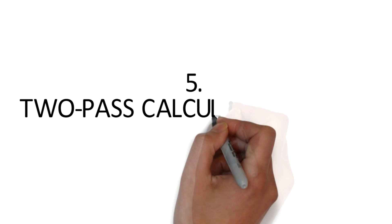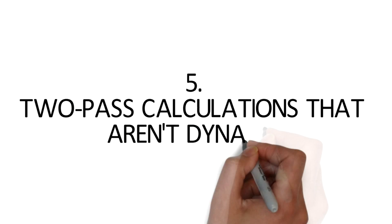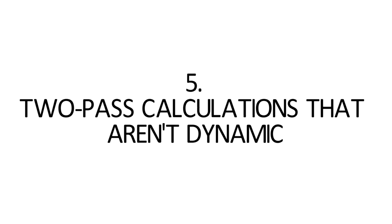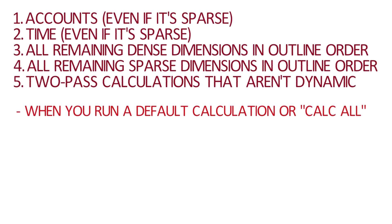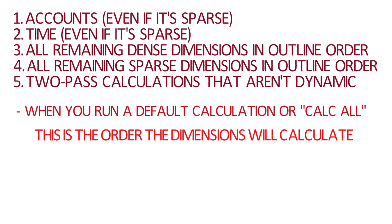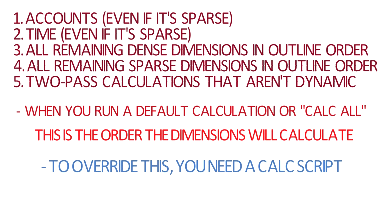Finally, looping back, any two-pass calculation members that are stored will be calculated again. This can result in a second or even a third pass through your database if Accounts or Time happen to be sparse dimensions. So anytime you run a default calculation — whether kicking it off through S-Base Administration Services, Calculation Manager, SmartView, the old S-Base Excel add-in, or anytime you run the command CalcAll — this is the order that the dimensions will calculate in. The only way to override this is by using the ever-powerful S-Base CalcScript, which we're going to be covering in a later video.